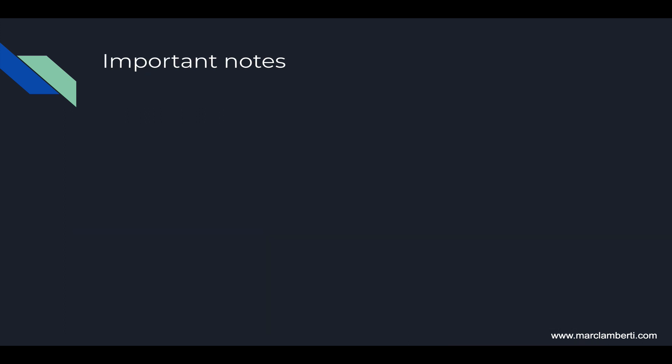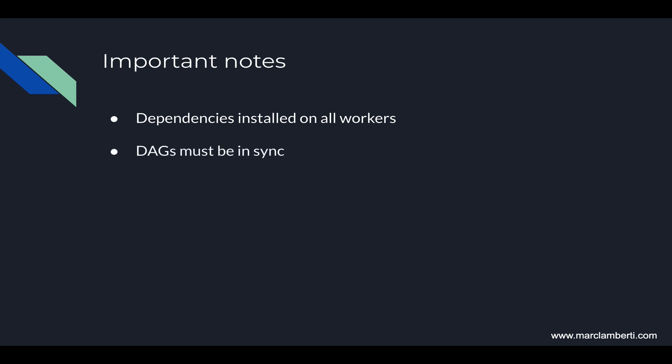Now let me share some important notes. First, since your tasks are going to be executed on different machines, pay attention to the dependencies required by those tasks. For example, if a task relies on Spark and Spark is not available on a given node, you will end up with an error. All dependencies should be installed on all nodes of your cluster. Next, the DAGs folder should be in sync with your workers — if one worker has an older version of a given DAG, you may get inconsistencies or errors. The easiest way is to set up an NFS mounted on each node so that the DAGs folder is shared by all nodes. Finally, since Airflow is installed on each node, the configuration settings defined in airflow.cfg must be homogeneous.